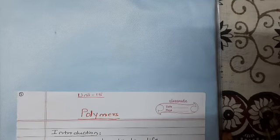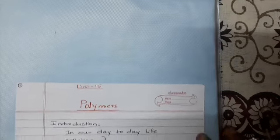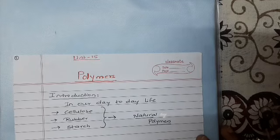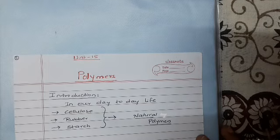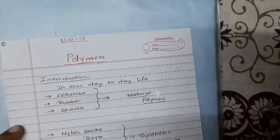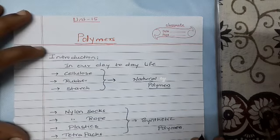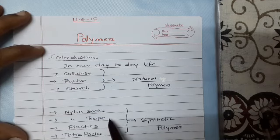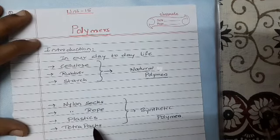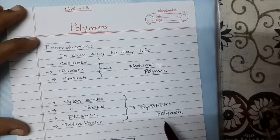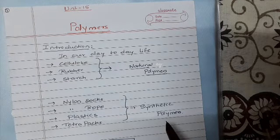Hello students, today we will discuss a new chapter — polymers. Millions of things involved in our day-to-day life are polymers. Cellulose is present in plants, rubber, starch which we eat is present in rice and potatoes — all these are natural polymers. Even synthetic polymers: we cannot survive without socks, which are made of nylon, nylon rope, plastics, and tetrapaks. All these are synthetic polymers, and some are biodegradable, non-biodegradable, and some are hazardous to our life.